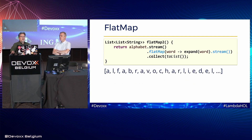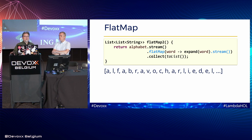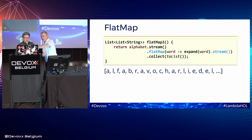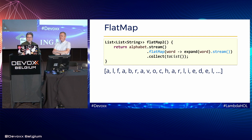If we change to flat map, we call expand on each word — which returns a list — then call .stream() on it since flat map needs a stream. The contents of that stream are inserted into the outer stream, and all results are collected into a single-level list. We now have a flattened structure of individual letters. Note: the return type should be List<String>, not List<List<String>> — that's a slide correction.